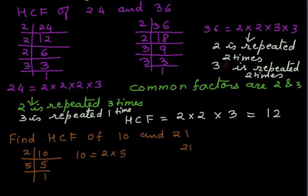Now we will find the factors of 21. 21 is divisible by 3, so 3 times 7 is 21. 7 times 1 is 7. So the factors of 21 are 3 and 7.